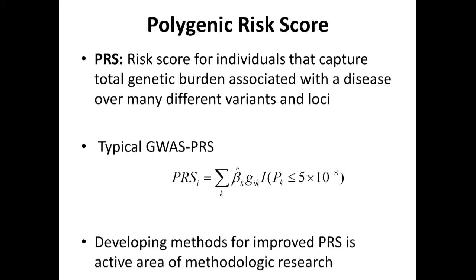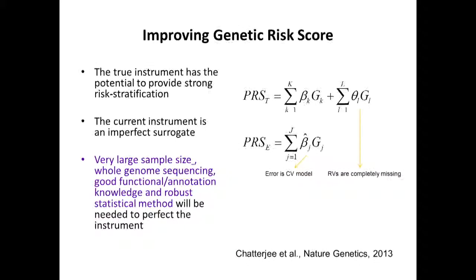So what is a polygenic risk score? It's a risk score for individuals that captures the total genetic burden associated with the disease over many different variants across multiple loci. Instead of having a variant as yes or no, it becomes more like a continuous score which counts the genetic load you carry over multiple different common variants. The main take-home message is that there is a true instrument we cannot observe — a true genetic risk defined by the effect of common variants, rare variants, and interactions — and in any given study, you can only construct an imperfect estimate of that true genetic risk.